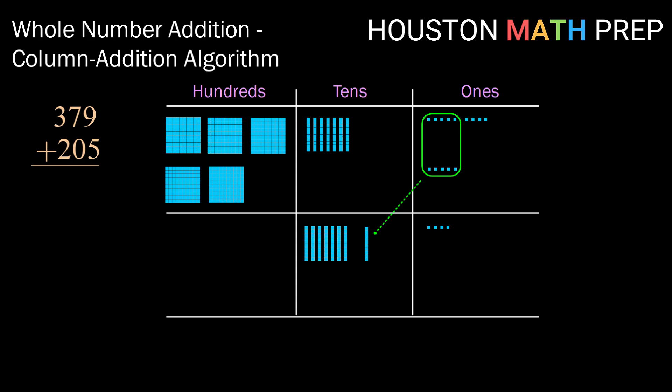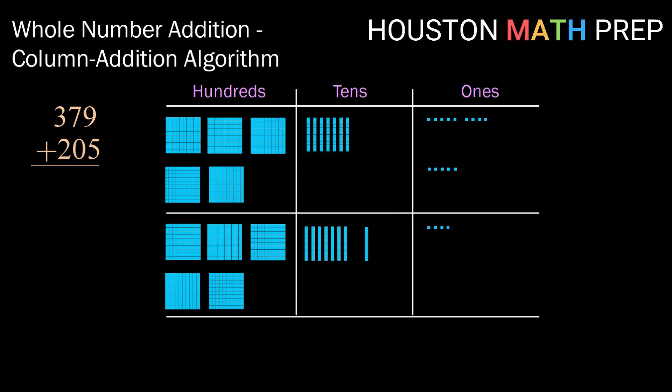Now the next step would be to see if I can trade in any of my tens. If I count up I have 8 ten blocks which means I don't have enough to trade in for a hundred block. So I'm just gonna go ahead and carry down my hundred blocks from above. So all five of those came down.